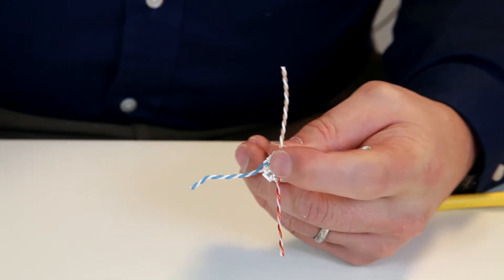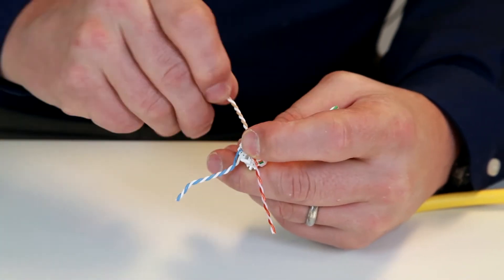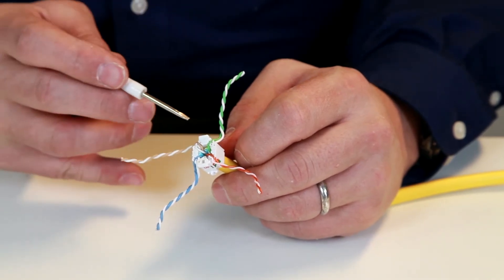I'm going to do each of the four pairs this way, observing polarity on my label. So here's all four pairs seated.